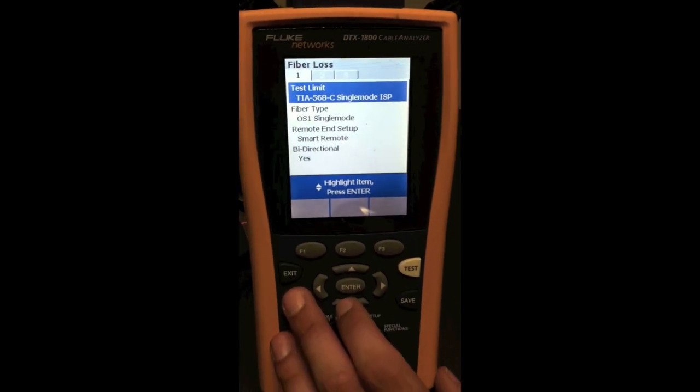Other things that we want to see here are OS1 single mode for our fiber type. And here we can also change our settings for generic and we have OS2 single mode. If we were testing multi-mode we can change those parameters scrolling up and down.